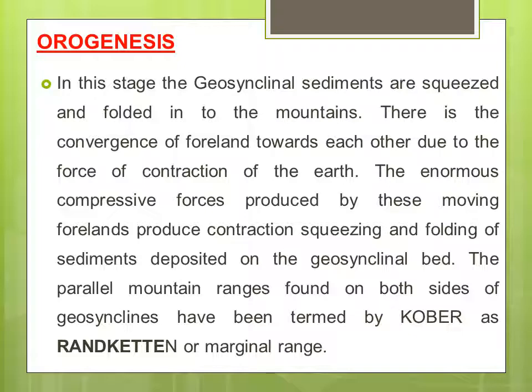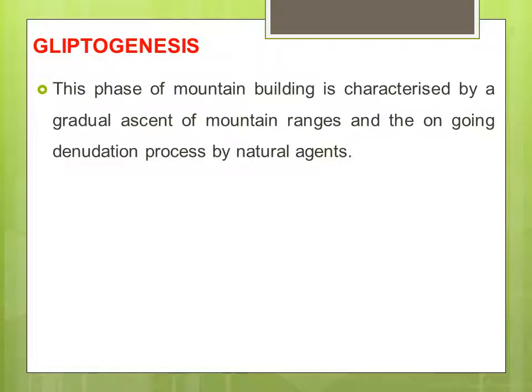The Eurasian and Australian landmass mountains can also be explained by this theory. The third stage is glyptogenesis, where the processes begun in orogenesis continue. The mountains formed in the second stage start to grow in size, beginning to ascend, and gradual denudation by natural processes begins in this stage.